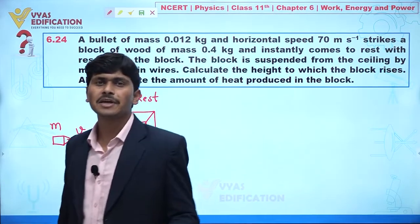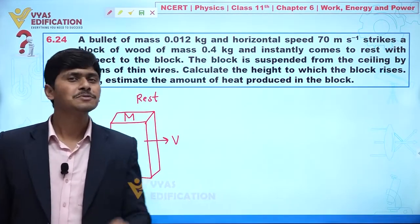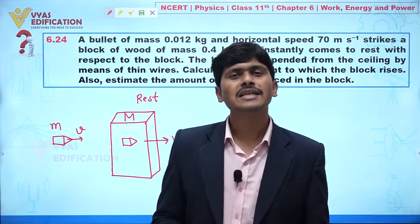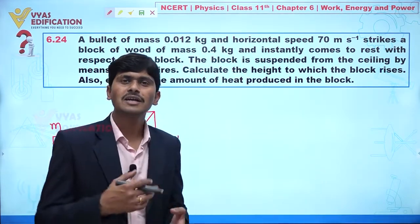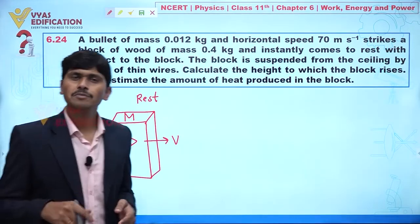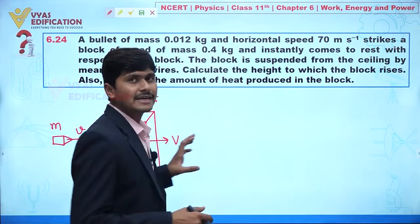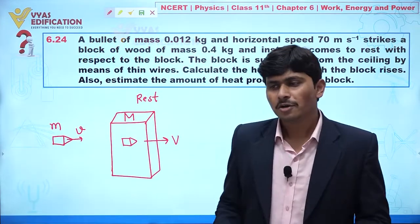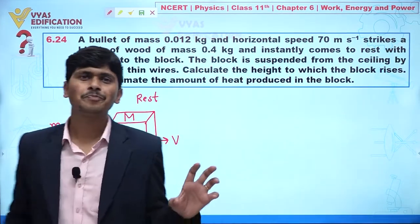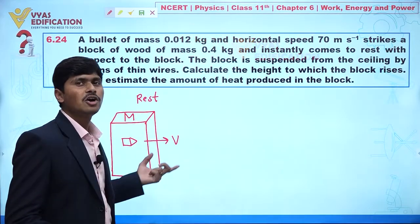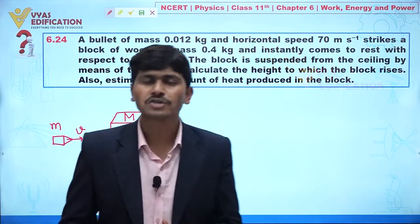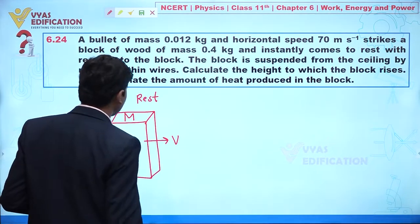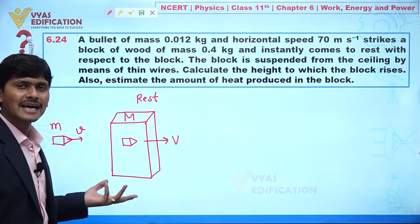There are two possibilities: either the bullet comes to rest because the block is already at rest, or both the bullet and block move with a common velocity. In that case, the relative velocity of the bullet with respect to the wooden block becomes zero. Let's call this common velocity v.